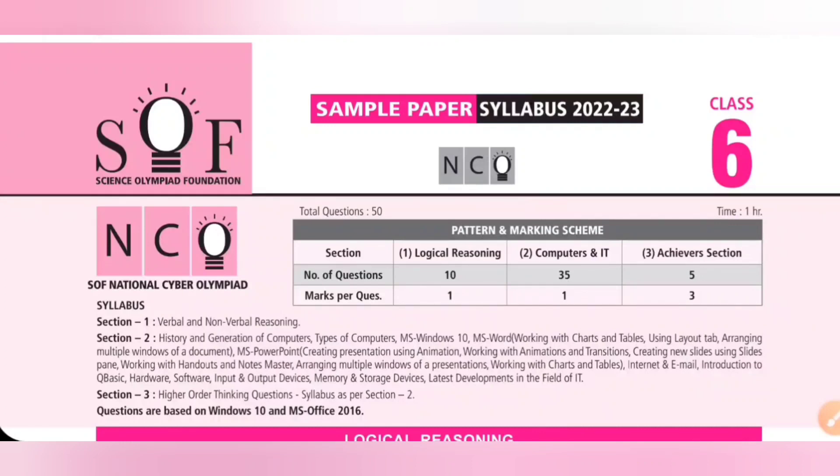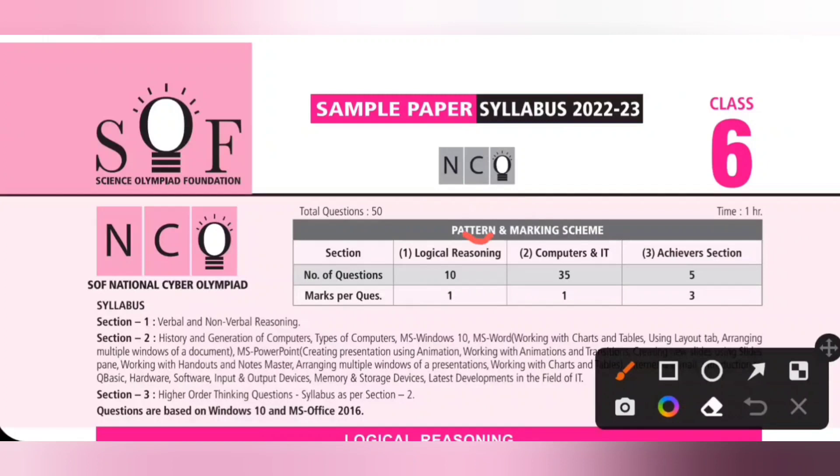Total number of questions: 50. Time: one hour. Number of sections: 3. That is logical reasoning, computers and IT, and then achievers section.